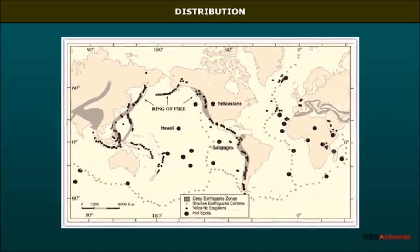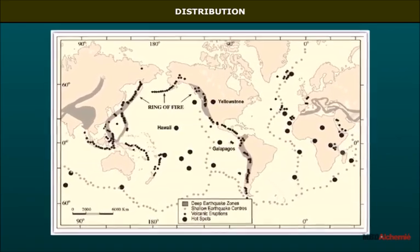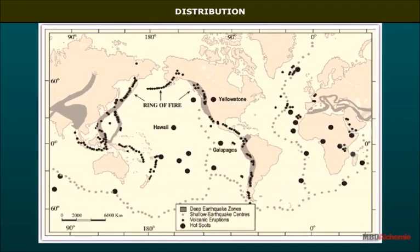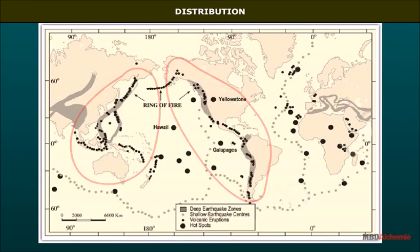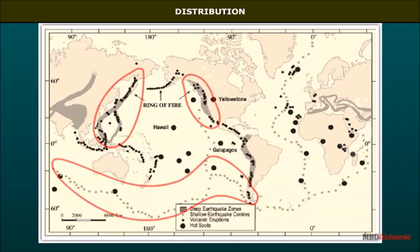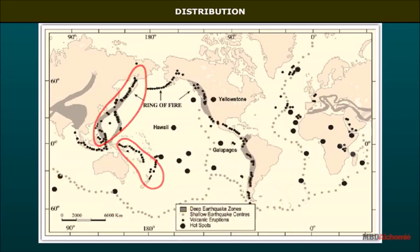Distribution: earthquakes and volcanoes are distributed all over the world, especially on the coastline and on tectonic boundaries. Volcanoes are found along the Pacific Ring of Fire, around the Pacific Ocean, and across the North and South Atlantic Ocean. Earthquakes occur around the Pacific Ocean, along the Indo-Australian Plate boundary, and on the eastern side of the Eurasian Plate.